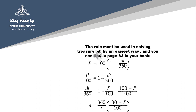Bills are sold at weekly public auctions with competitive bids expressed on the basis of 100, with not more than three decimals. The yield on T-bills is reported on a bank discount basis. You can find this reading on page 82 in your book, and the remainder on page 83.